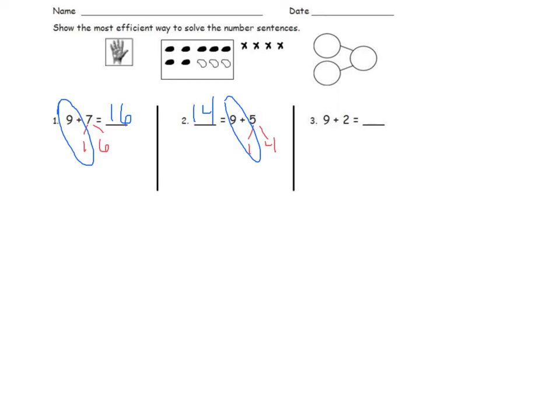Problem number 3 asks us to add 9 plus 2 equals. To solve this problem, it is more efficient to count on from 9. So I'll put 9 in my head and count on 2 times. 10, 11. The answer to 9 plus 2 is 11.